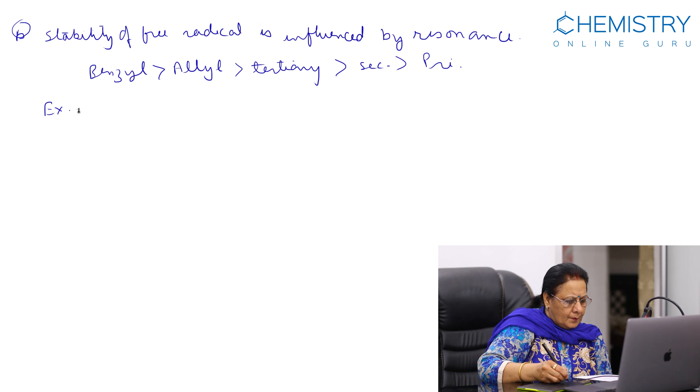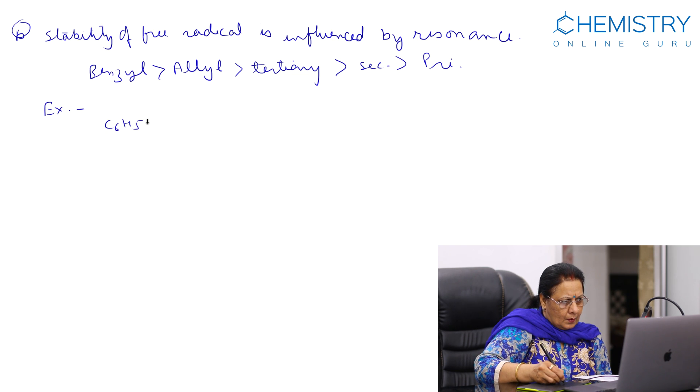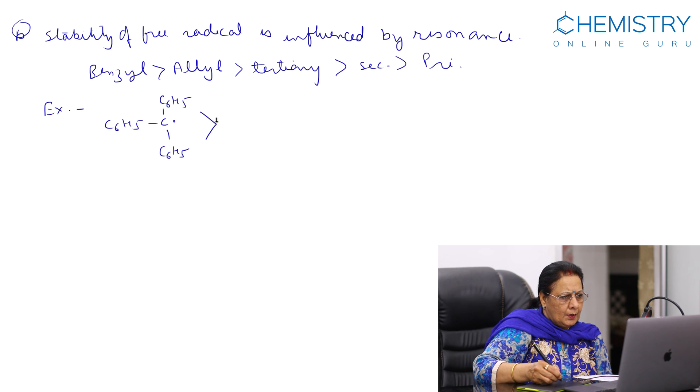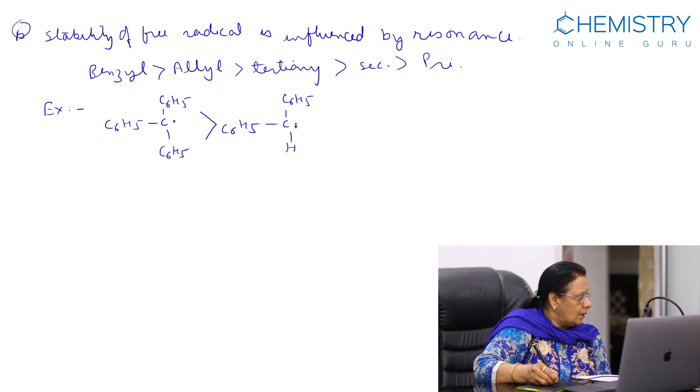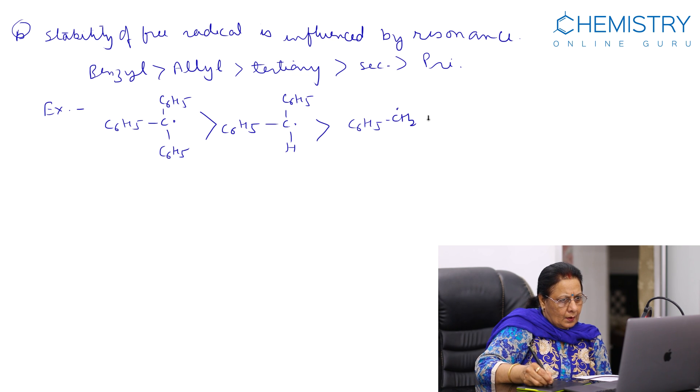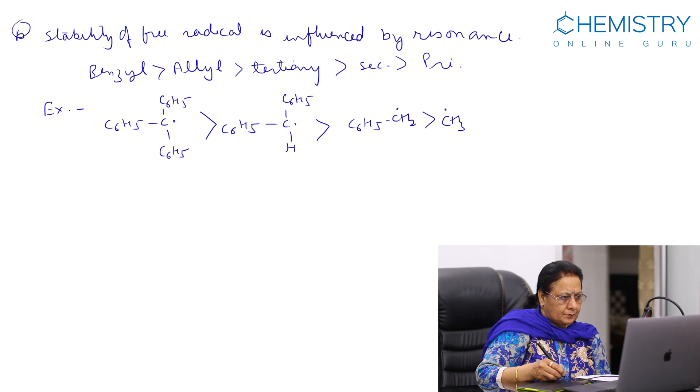Example is: triphenyl free radical is more stable than others. This is the decreasing order of stability.